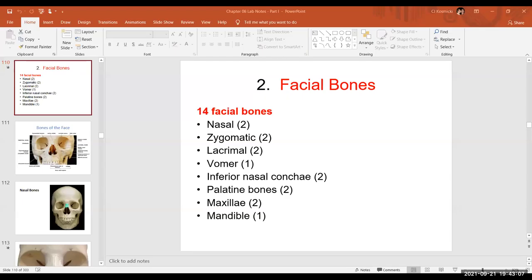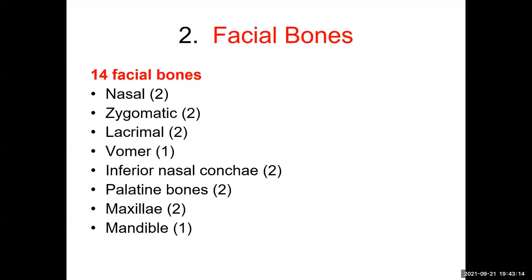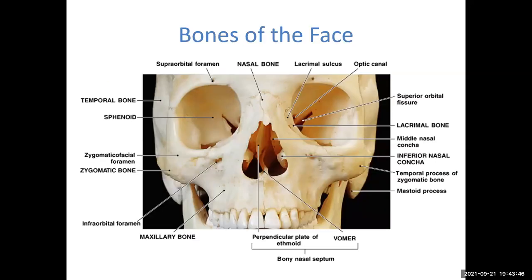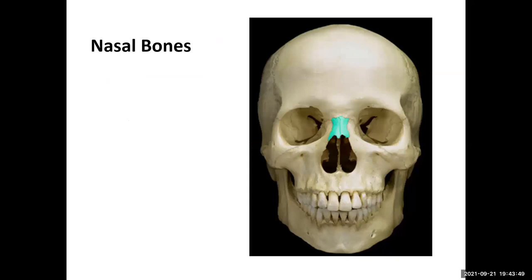We finished up the cranial bones of the skull and now we're moving into the facial bones. There are 14 different types of facial bones. A number behind each bone name indicates how many bones there are — a two means it's a paired bone with a left and right, while a one means it's a single bone. We'll work through several of these, reviewing some and going over new ones.